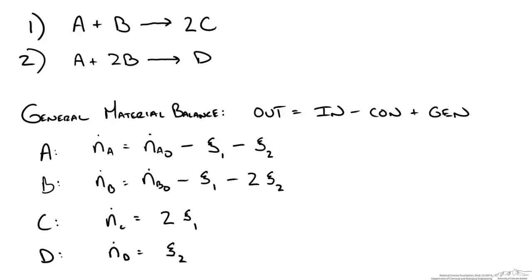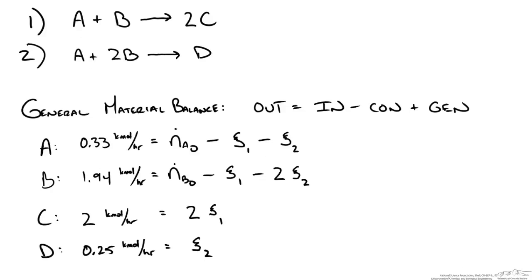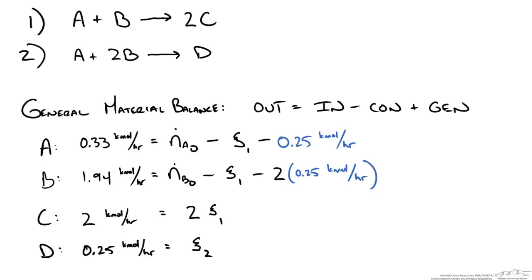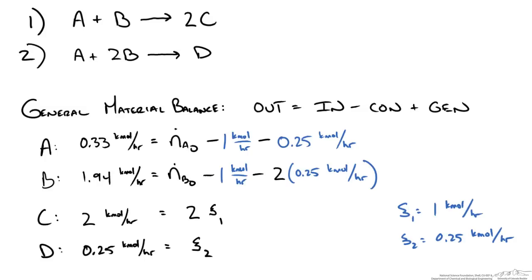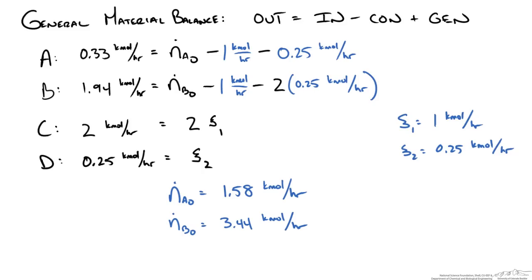We now have four material balance equations and four unknowns. Some equations are straightforward: from the D balance, the extent of reaction 2 must be 0.25 kmol per hour. Plugging that in, we can also solve for the extent of reaction 1, which equals 1 kmol per hour. Substituting both extents into the A and B balances, we solve for the inlet flow rates: Na0 equals 1.58 kmol per hour and Nb0 equals 3.44 kmol per hour.